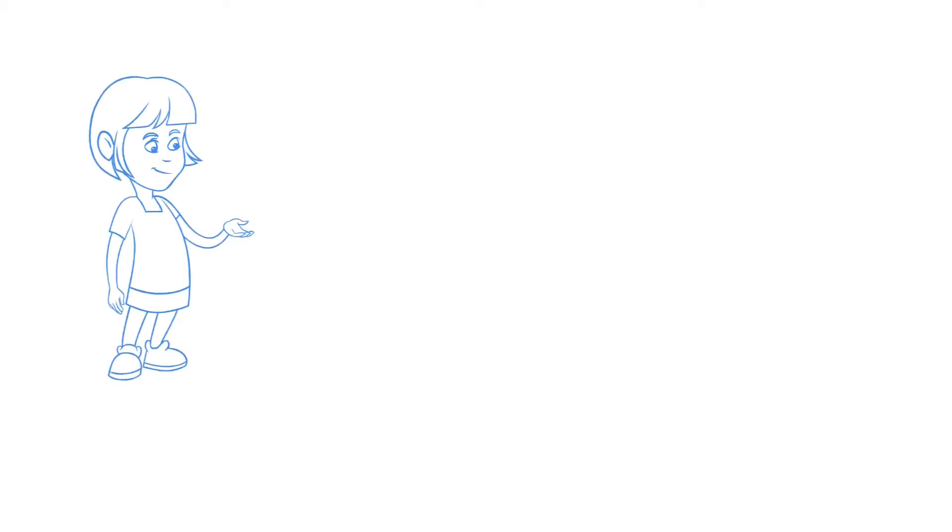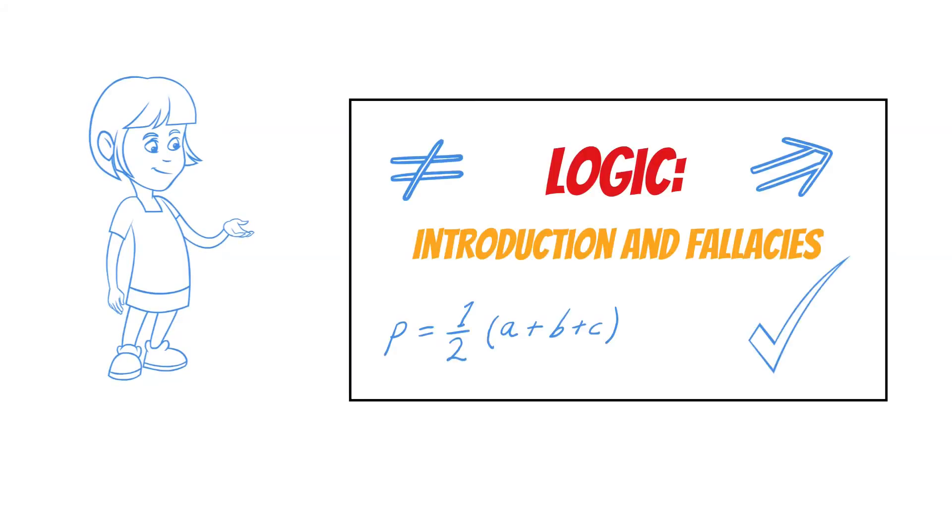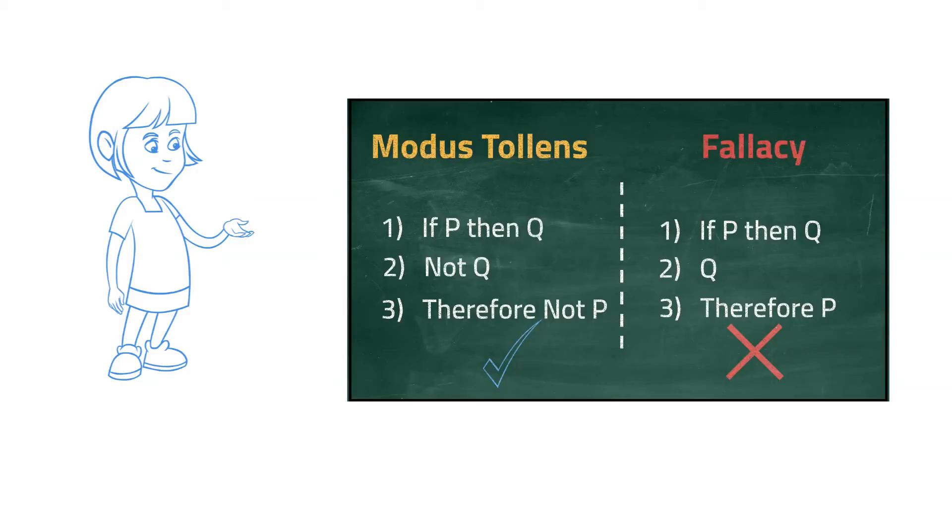In a previous video, I explained logic and what we mean by valid and invalid reasoning. I introduced the example of modus tollens, a form of valid reasoning, as well as the fallacy of asserting the consequent, a form of invalid reasoning. This time, I will show you two more examples which are very similar.